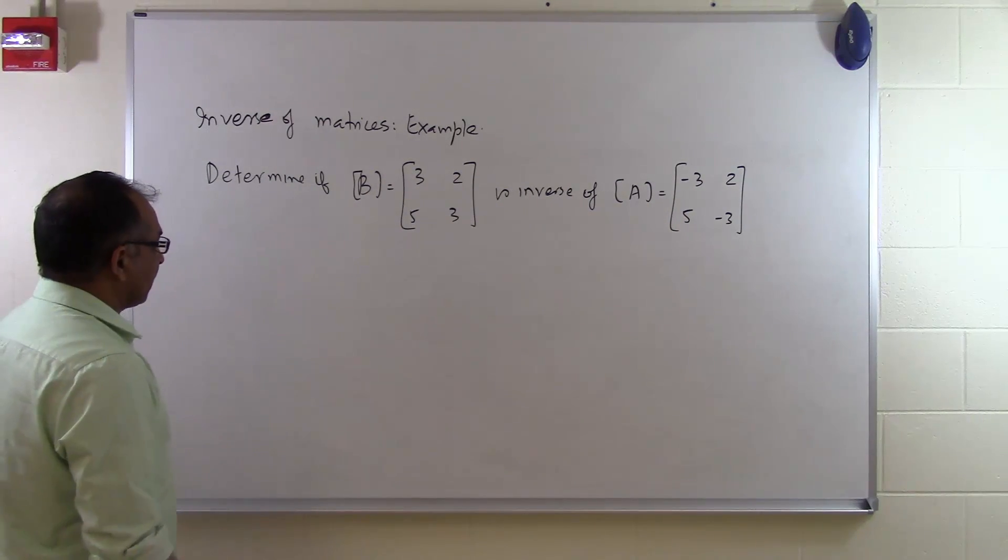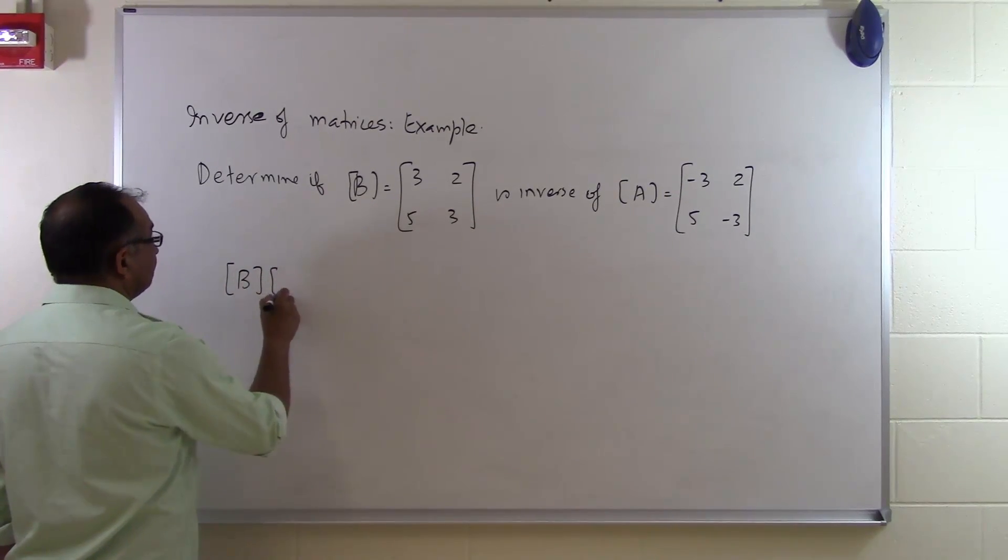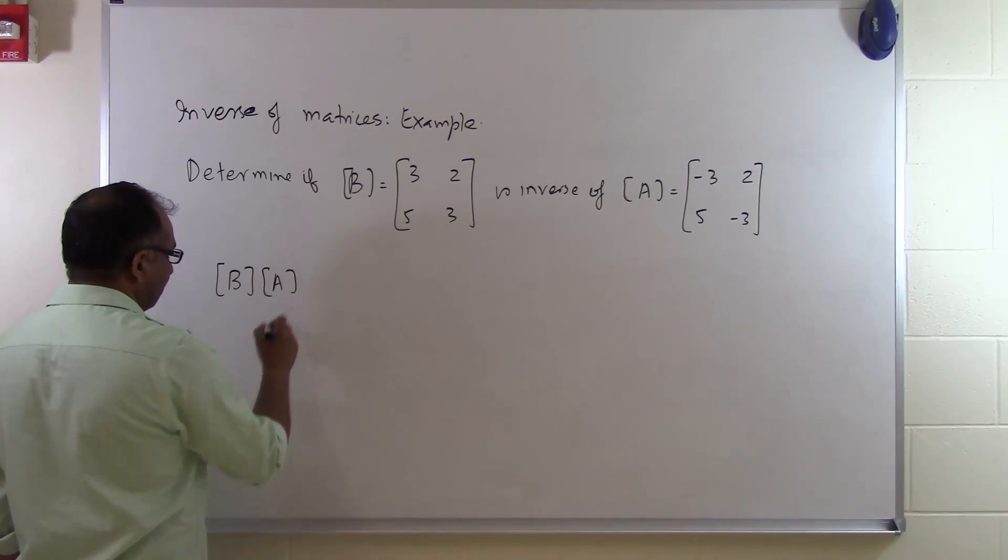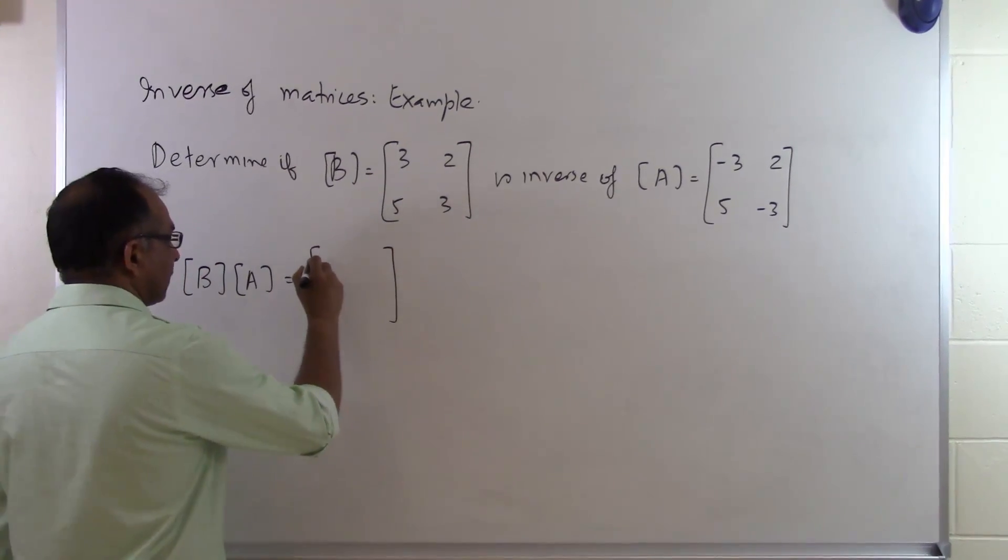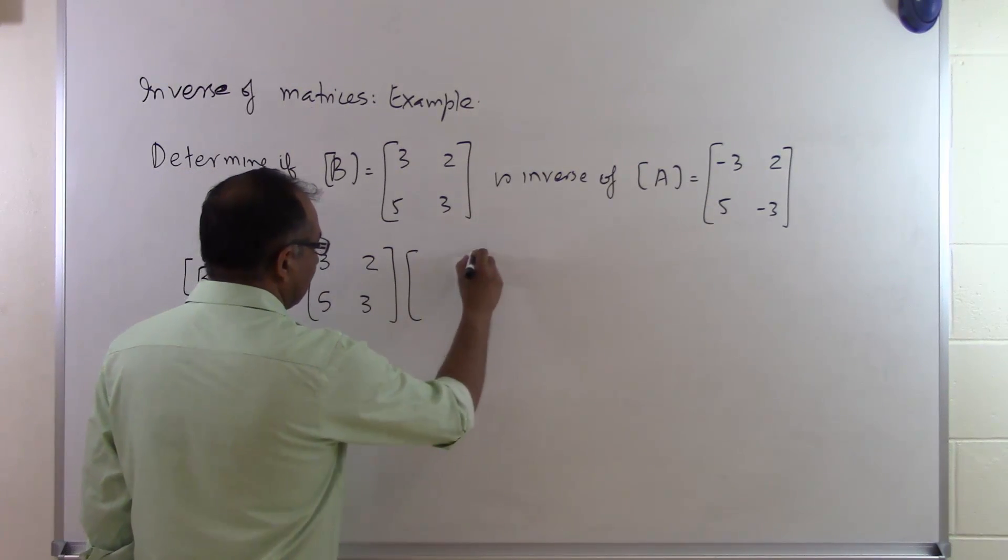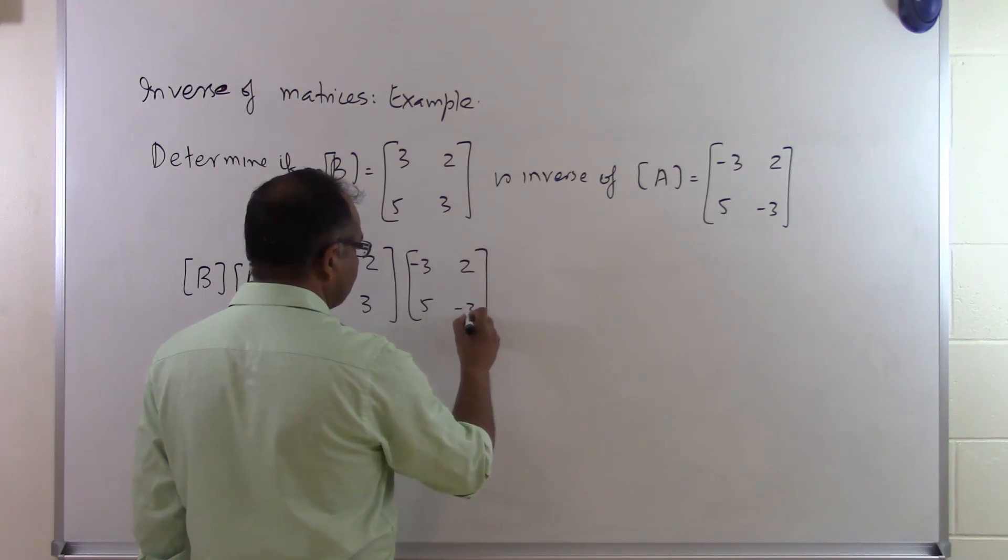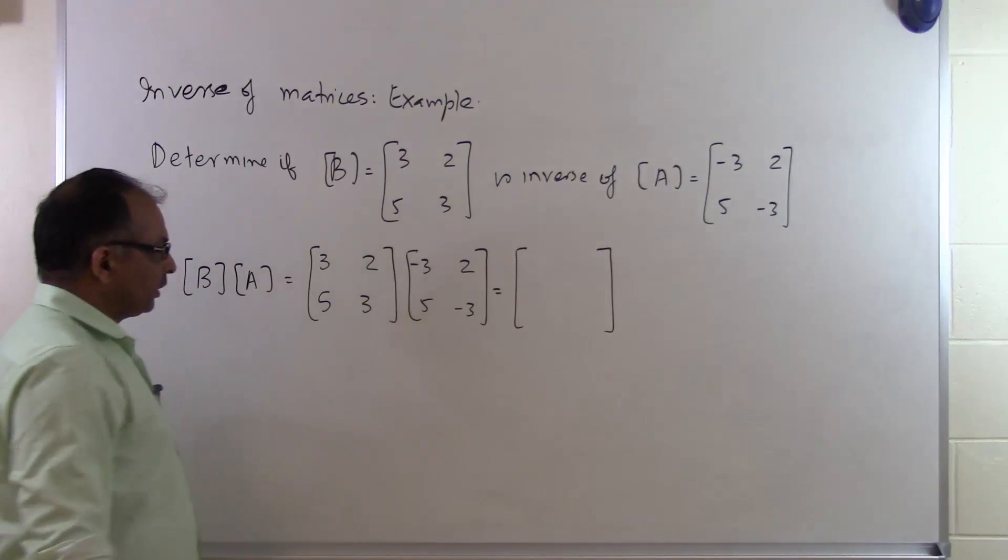So in order to show whether B is inverse of A, I can take B multiplied by A and see whether it's turning out to be the identity matrix. So I put 3 2 5 3 here and then I put minus 3 2 5 minus 3 here. I have a 2 by 2 matrix being multiplied by another 2 by 2 matrix, so I will get a 2 by 2 matrix.